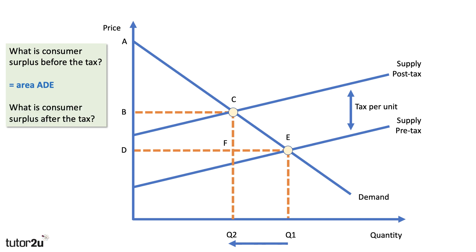The tax increases the price from D to B, and the quantity goes down from Q1 to Q2 as we move up the demand curve from point E to point C. So the next question is: what is consumer surplus after the tax? The answer is area A, B, C — the price has gone up to B and the area left underneath the demand curve is area A, B, C.